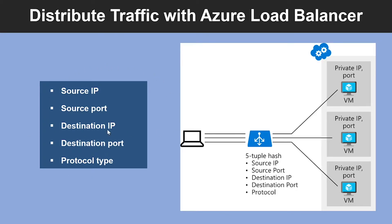The hash is made from the following five elements: Source IP, which is the IP address of the requesting client; Source Port, the port of the requesting client; Destination IP, which is the destination IP of the request; Destination Port, that is the destination port of the request; and the Protocol Type, such as TCP or UDP. The Load Balancer supports inbound and outbound scenarios, providing low latency and high throughput, and scales up to millions of flows for all TCP and UDP applications.